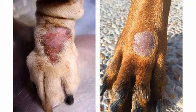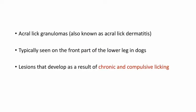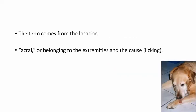Next is acral lick granuloma. These are pictures of acral lick granulomas in a dog — from the picture itself you can see the location. It is usually happening on the distal part of the forelimb, also known as acral lick dermatitis, and is typically seen on the front part of the lower leg. Lesions develop as a result of chronic and compulsive licking. 'Acral' means extremities, and 'lick' depicts the cause of the disease.